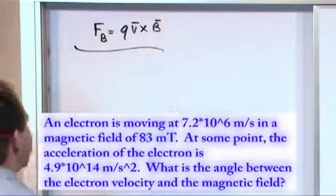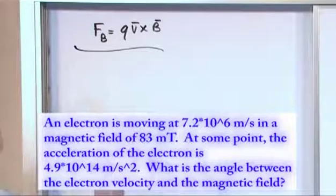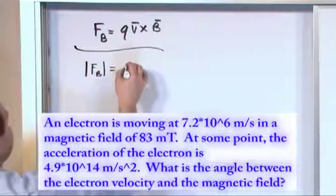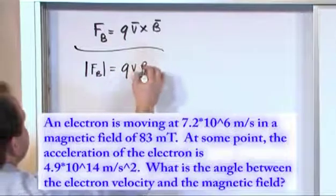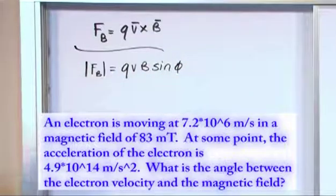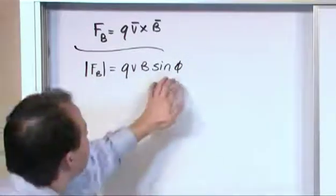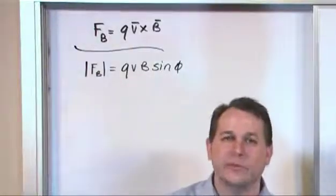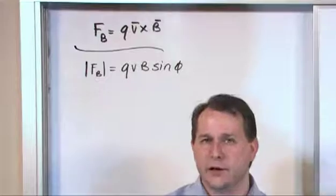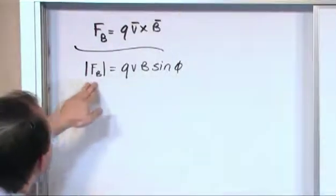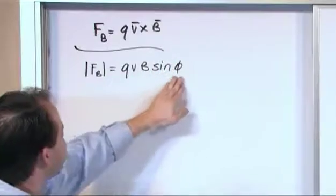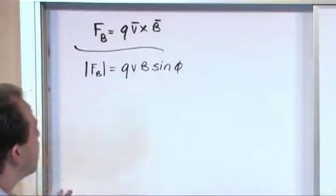So this is a great example to use the simplified version, the magnitude of this force. The magnitude is going to be Q V B times the sine of the angle between them. Because ultimately, we're trying to find out what the angle is between them. That's what we want to know. We don't care about the direction everything's pointing. All it's asking for is the angle between them. So if we could put everything into this equation and calculate the angle between them, because we can find the inverse sine, then we'll have the answer.